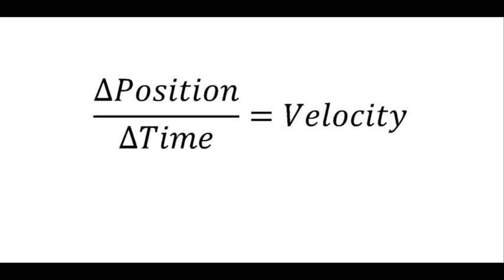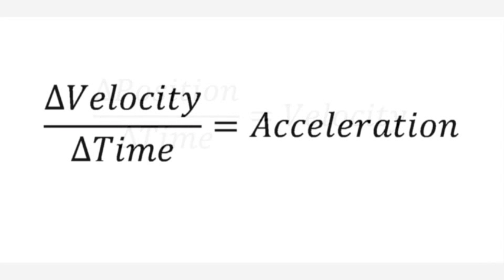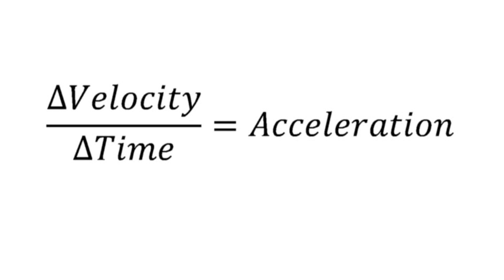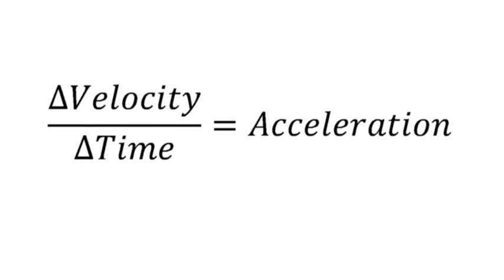To repeat what we have just learned: position divided by time is equal to velocity, the rate at which a body travels. Velocity divided by time is equal to acceleration, the rate at which the velocity of a body increases.